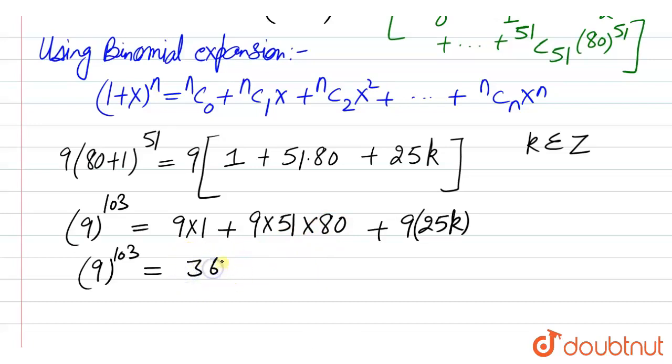36729 on multiplying and adding. 9 and 9 times 51 times 80, and we have this: this is 25 into some other number.